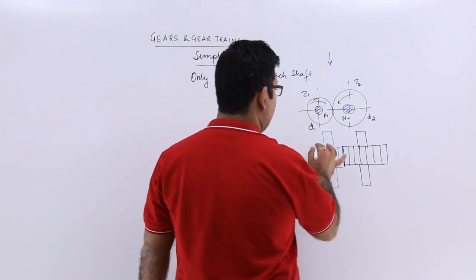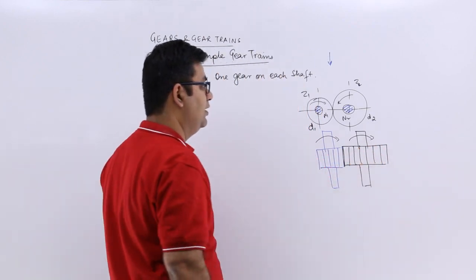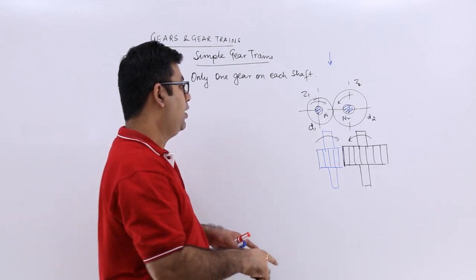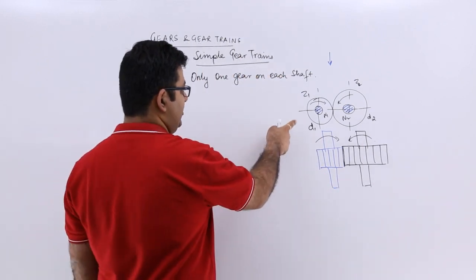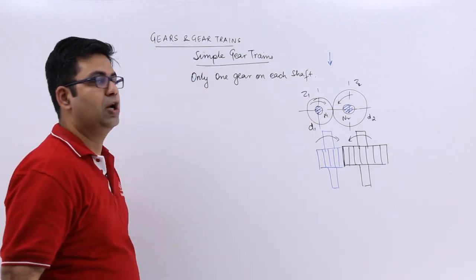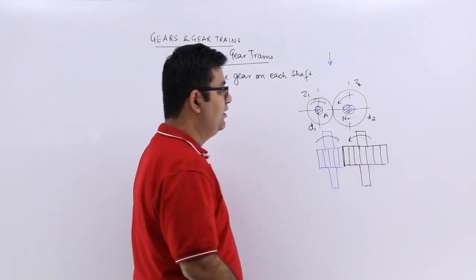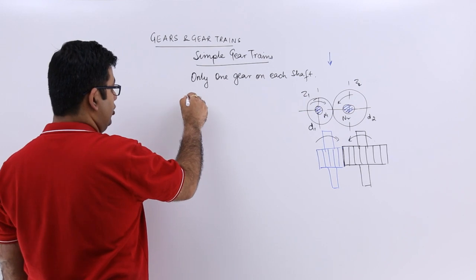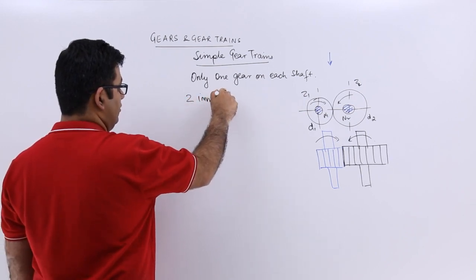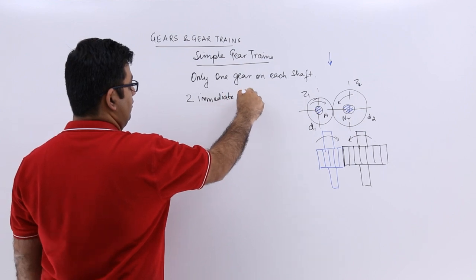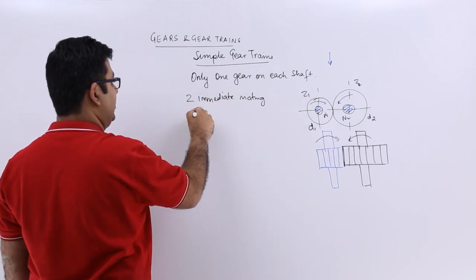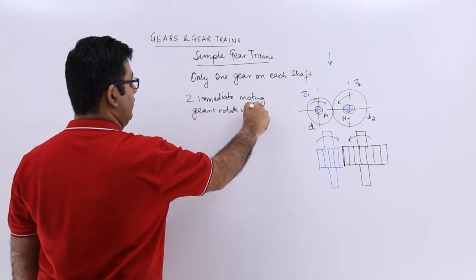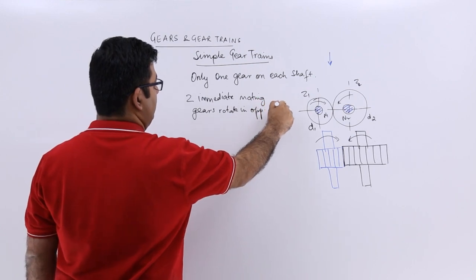This becomes a simple gear train in which these shafts are rotating like this. The shafts which are in direct contact will be rotating in the opposite direction. If the first gear is moving in a clockwise direction, the second one will move in an anticlockwise direction. Very important thing is that the two immediate mating gears rotate in opposite directions.